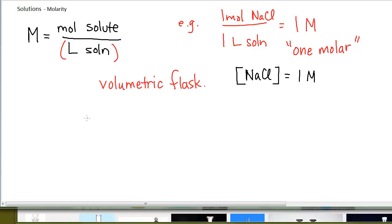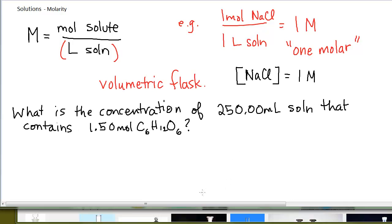Let's look at a simple example. This question is, what is the concentration of 250.00, and that's usually because the volumetric glassware does measure that precisely, 250 milliliter solution that contains 1.50 moles of C6H12O6. In order to calculate the molarity of this solution, it is this simple. You simply put in 1.5 moles in the numerator. 250 milliliters needs to be changed to liters. You're going to be converting milliliters to liters a lot in this chapter.